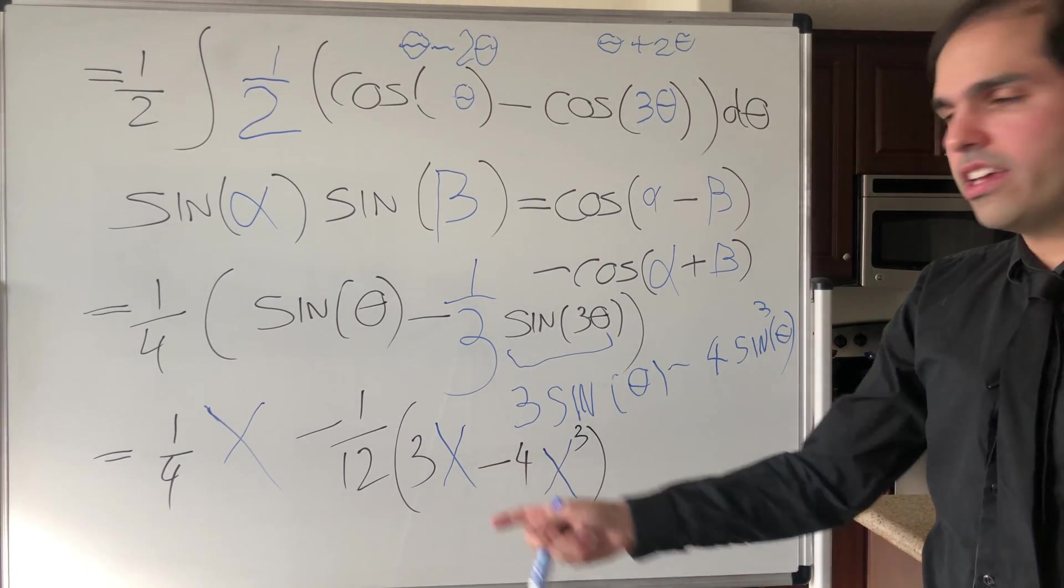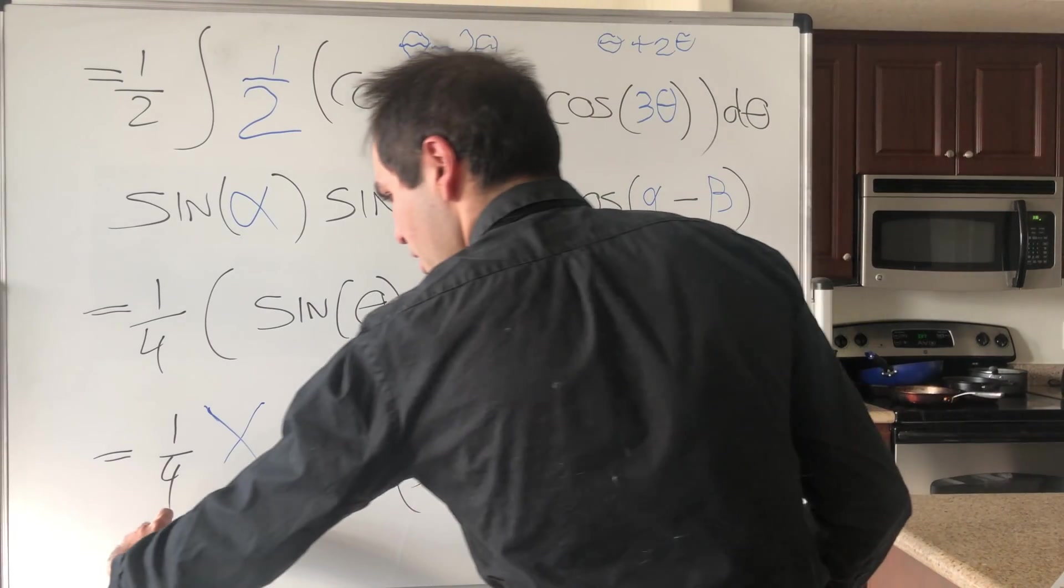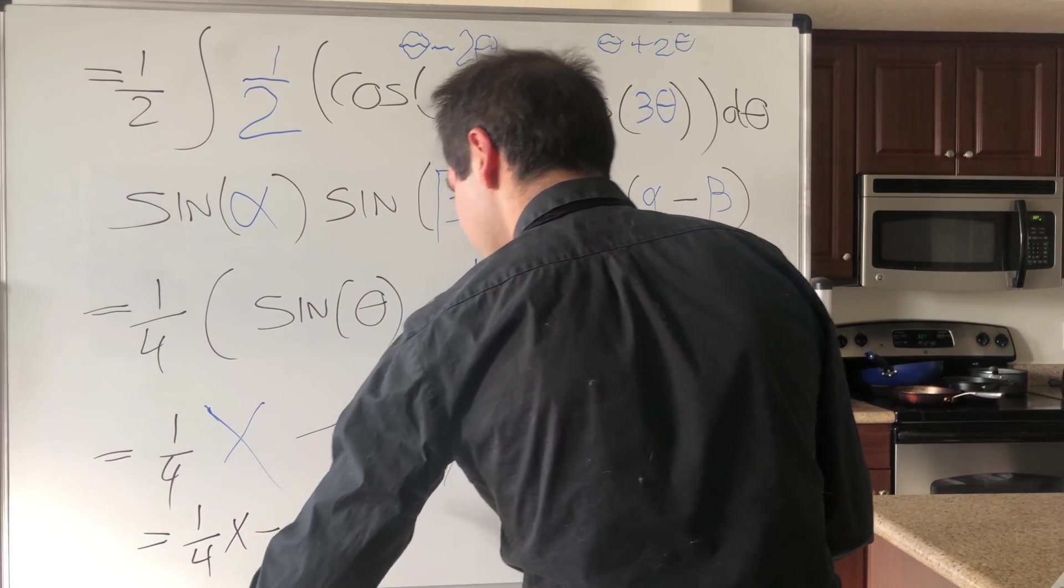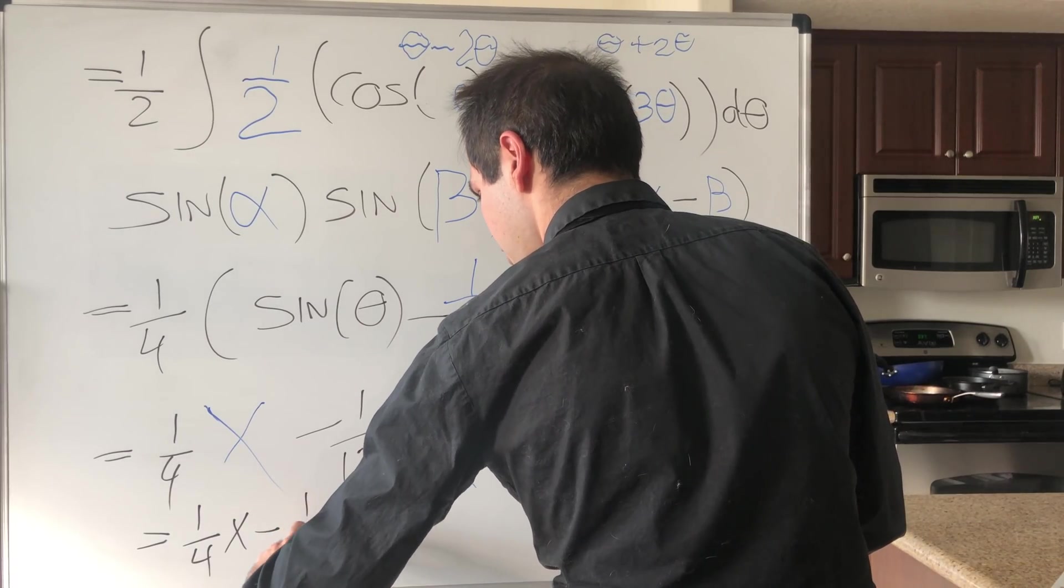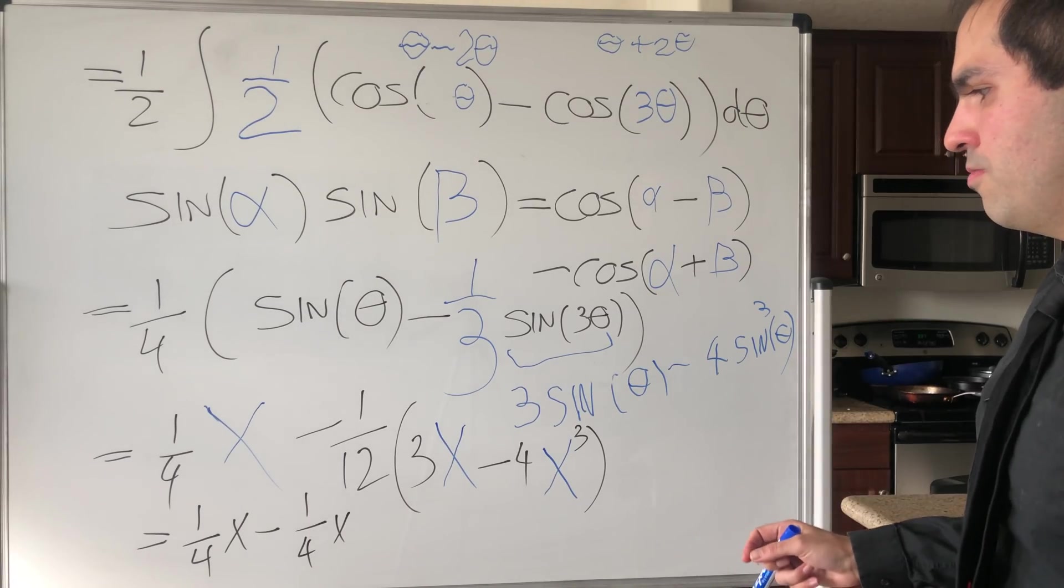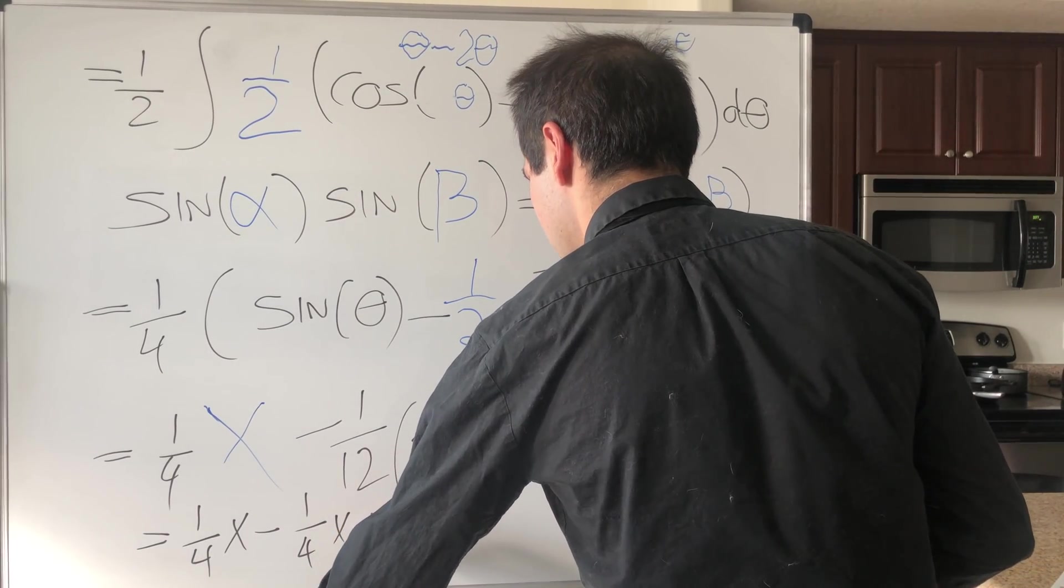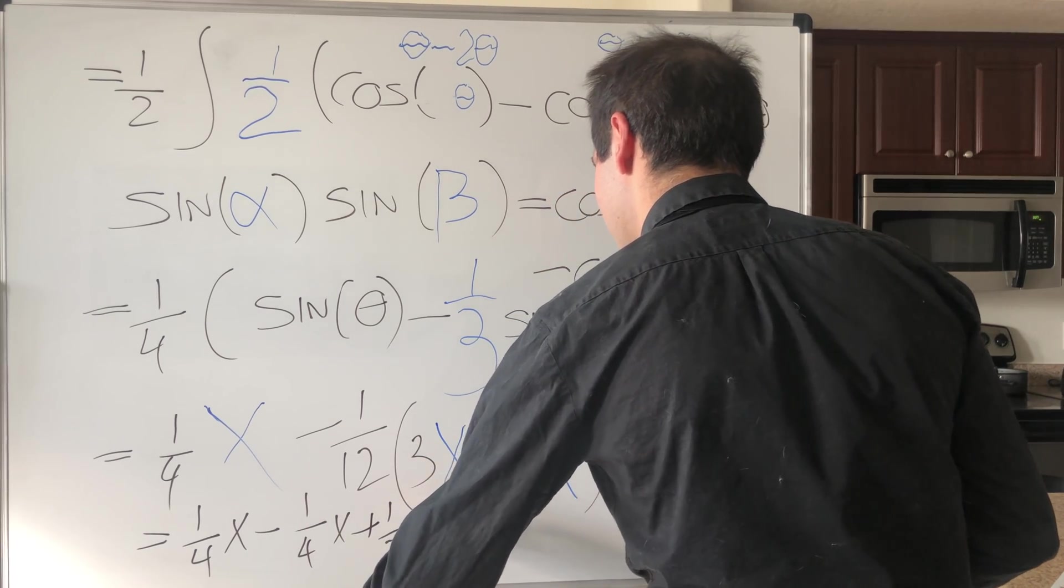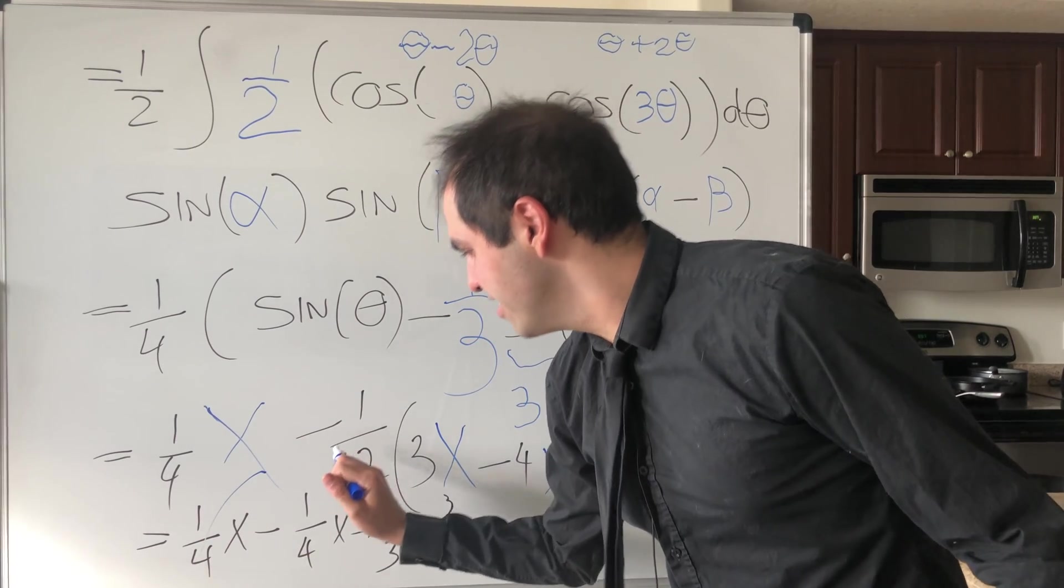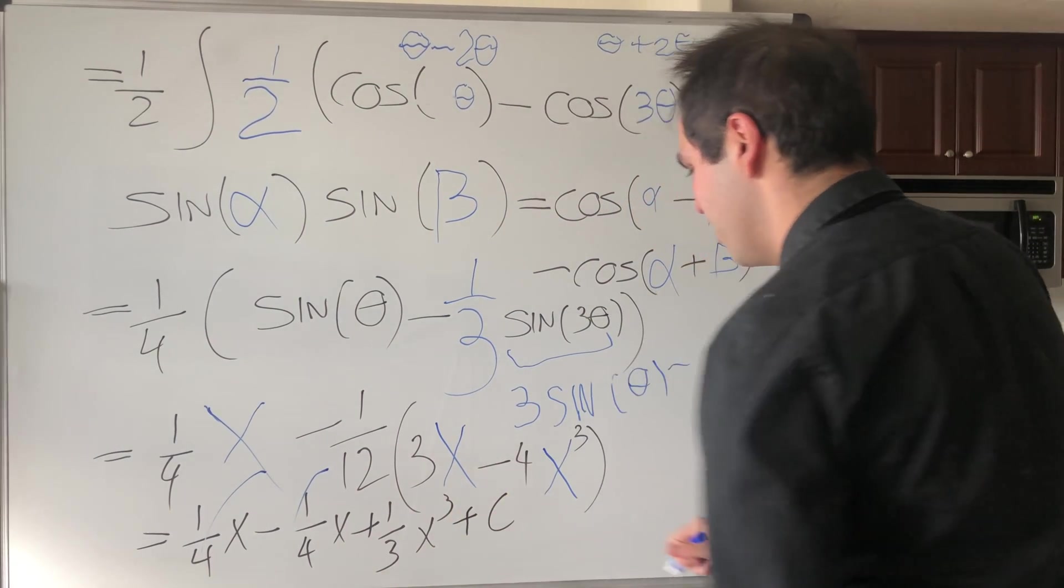All right, and then we can simplify this hopefully a little bit. So this becomes one fourth x plus, again, in this case, one fourth x, and then plus, so minus one twelfth times minus one fourth, that is one third, one third x cubed. And then the beautiful result of the day, this cancels out, and then we're just left with one third x cubed plus a constant.